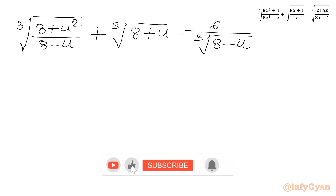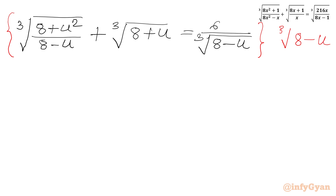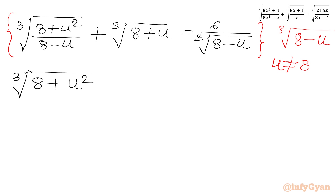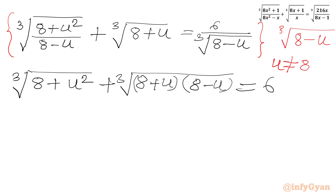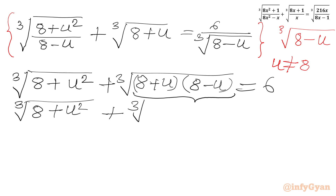Now we will multiply both sides of the equation by cube root of (8 minus u). Since u is not equal to 8, from the right-hand side the denominator will be cancelled out, and from the left-hand side the first term also simplifies. So we will get: cube root of (8 plus u²) plus cube root of (8 plus u)(8 minus u). And the right-hand side will be 6. Now here we can apply the difference of two squares formula.